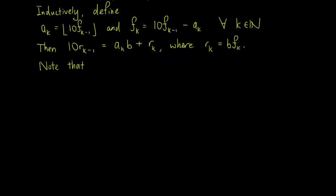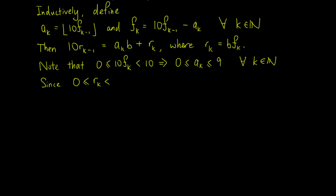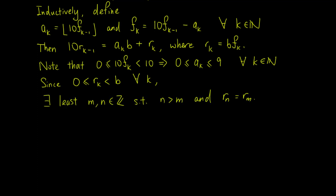Note that 10 times fk is greater than or equal to 0 and less than 10, which means ak is an integer between 0 and 9 inclusive. Also, since rk is greater than or equal to 0 and less than b for all k, the rk's cannot be all distinct, so two of them must be the same at some point. Therefore, there must exist integers m and n such that n is greater than m and rn equals rm. We can take m and n to be the least integers with this property.